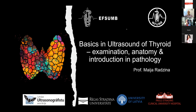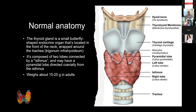Normal anatomy: the thyroid gland resembles a butterfly shape and is an endocrine organ located in the front of the neck, wrapping around the trachea. It is composed of two lobes connected in the middle by a bridge called the isthmus. Sometimes there is an extension cranially called the pyramidal lobe.